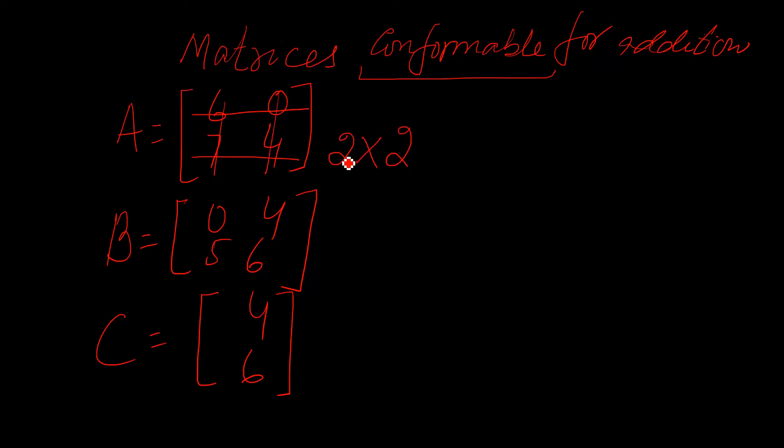So its dimension is two by two. The first represents the rows, second represents the columns. So this matrix has two by two dimension. Similarly this matrix, keep in mind you have to consider rows first. This is two by two as well. What about this one? This is two rows and one column. See here this is different.